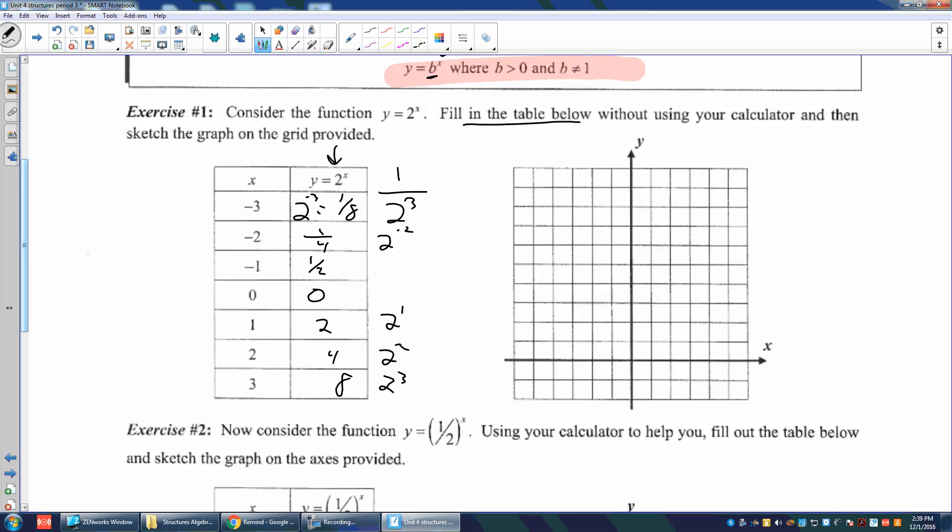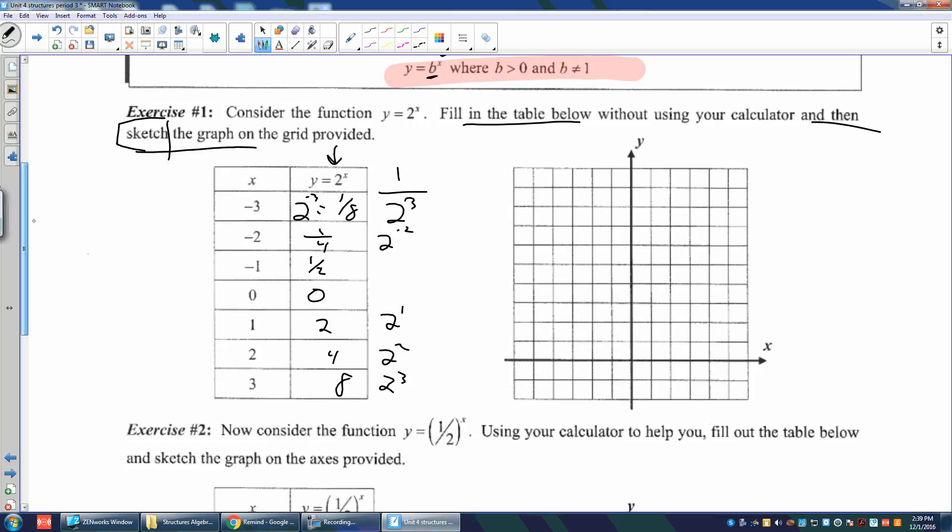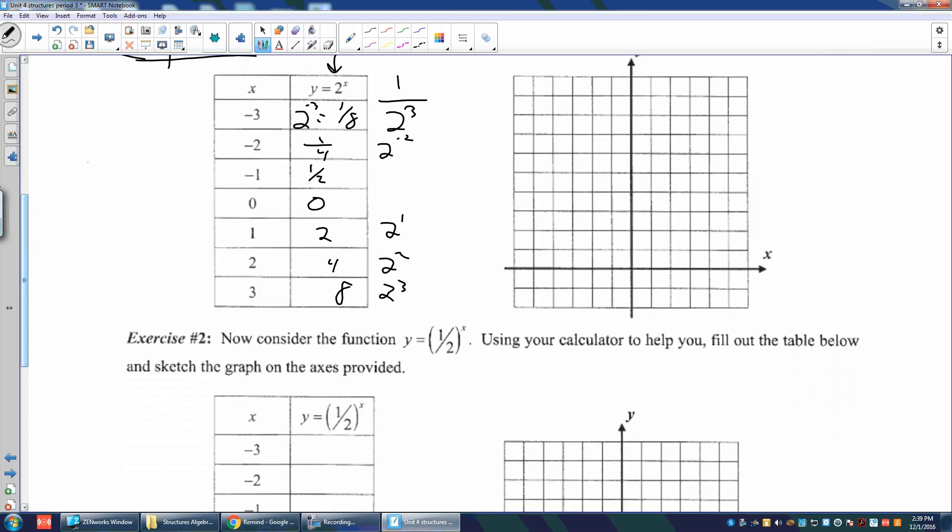Fill in the table below without using your calculator. I did it mentally. And then sketch on the grid provided. So we notice that we have - anything to the 0 power is 1. I hope I said that. So we notice that we have the point 0 in the x direction, 1 in the y direction. And then I'm going to plot 1, 2. And then I'm going to plot 2, 4. And then 3, 8.